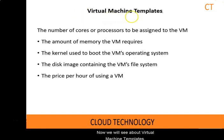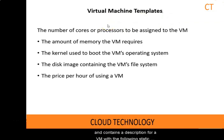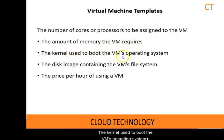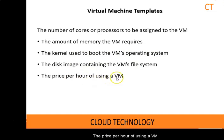Now we will see about virtual machine templates. A VM template is analogous to a computer's configuration and contains a description of a VM with the following static information: the number of cores or processes to be assigned to the VM, the amount of memory the VM requires, the kernel used to boot the VM operating system, the disk image containing the VM's file system, and the price per hour of using the VM.